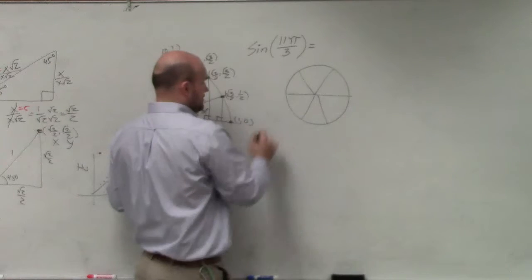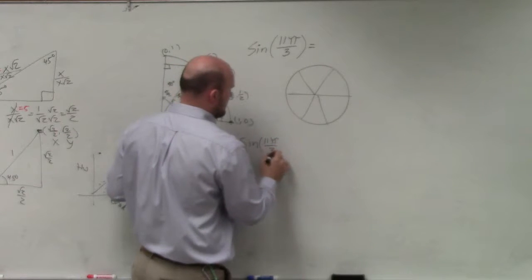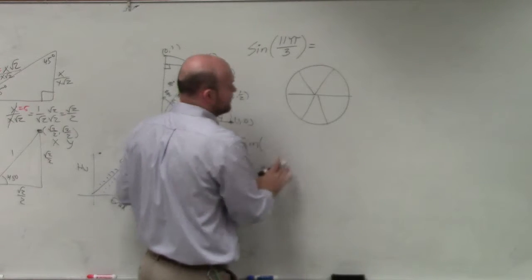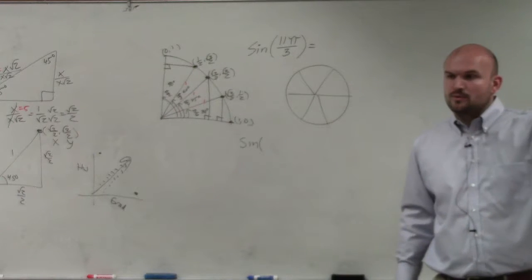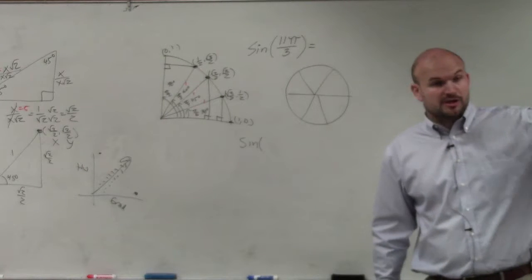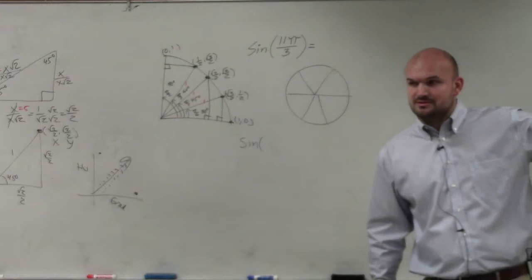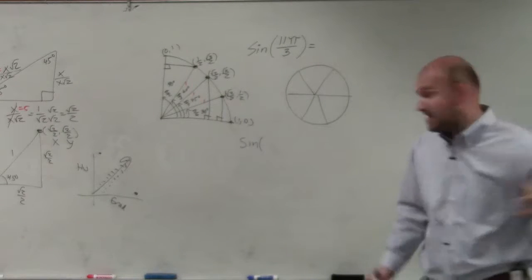So what I can do is I can rewrite the sine of 11π/3. I'm sorry. I can rewrite 11π/3 in terms of its coterminal angle. So what would be a revolution in terms of all the way around circle is 2π, but in thirds would be what? What fraction? Close?